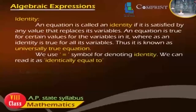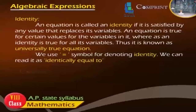Identity: An equation is called an identity if it is satisfied by any value that replaces its variables. An equation is true only for certain values of its variables, whereas an identity is true for all values of its variables. Thus, it is known as a universally true equation. We use the identical equal symbol for denoting identity, read as 'identically equal to'.